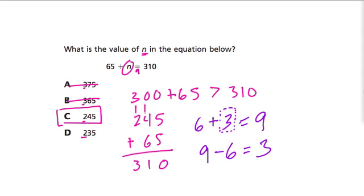So 65 plus, well, we know it. We know it's 245. Equals 310. But of course, that means that, and this is what we could have done here, 310 minus 65 would equal our answer. How do we do this?